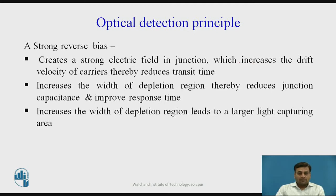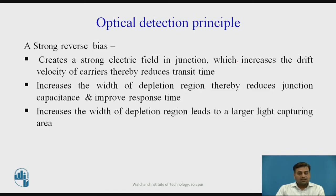Whenever we apply an electric field across a photodetecting material to separate the electrons and holes generated through the photodetection process, we apply a strong reverse bias. This reverse bias creates a strong electric field in the junction, which increases the drift velocity of the carriers and therefore reduces the transit time. A strong reverse bias also increases the width of the depletion region, thereby reducing the junction capacitance and improving the response time. Additionally, the increased width of the depletion region leads to a larger light-capturing area, increasing efficiency. That is why a reverse bias is always applied across any photodetecting material.